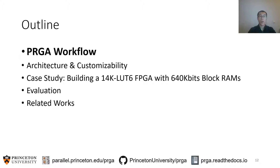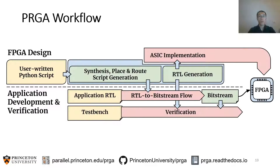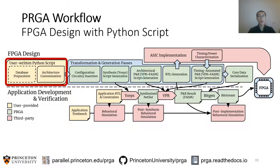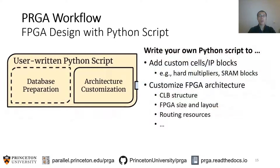Let's first take a look at the PRGA workflow. This is the simplified workflow shown before; a more detailed workflow would actually look like this. Don't be scared, because I will explain this figure step by step. The first step in the workflow is the user-written Python script. In the Python script, you can add custom cells or IP blocks and customize the FPGA architecture. The architecture is highly customizable, and we will elaborate on that in the next section.